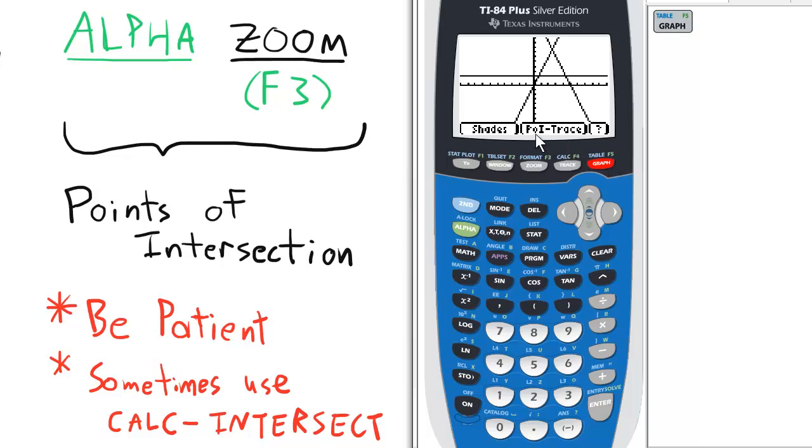We're interested in the POI, which stands for Points of Intersection. Please remember that. Okay, so to access this, we press alpha and zoom for F3.